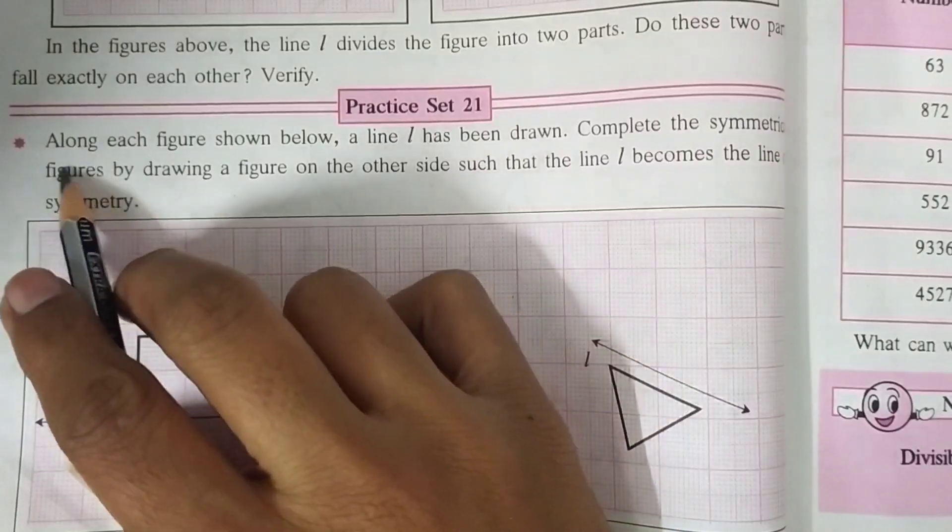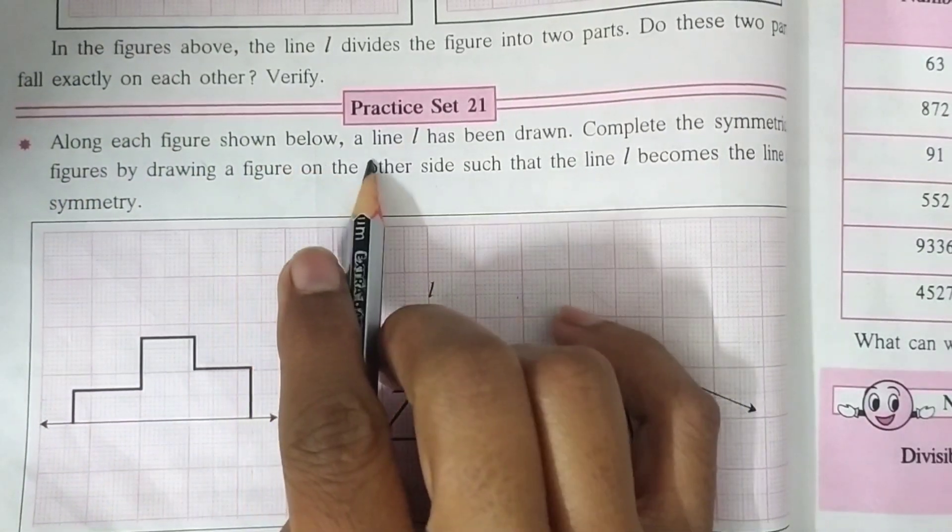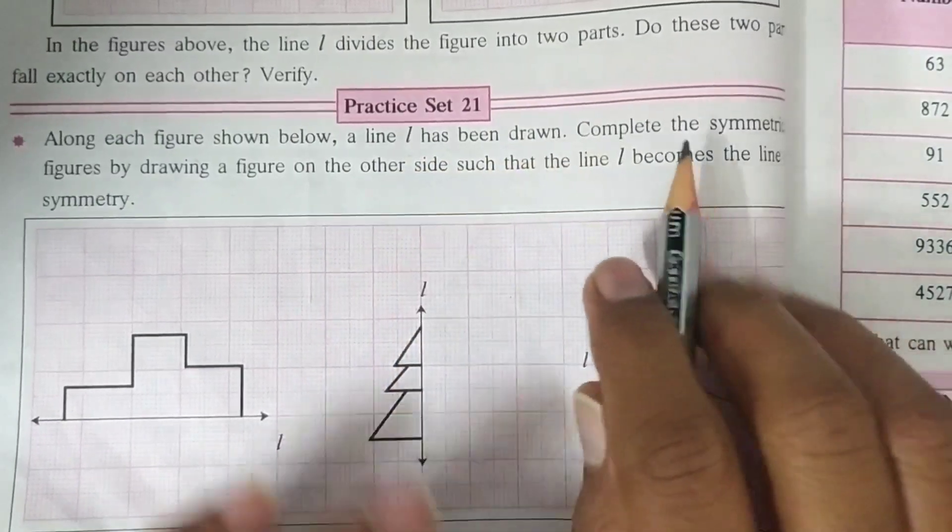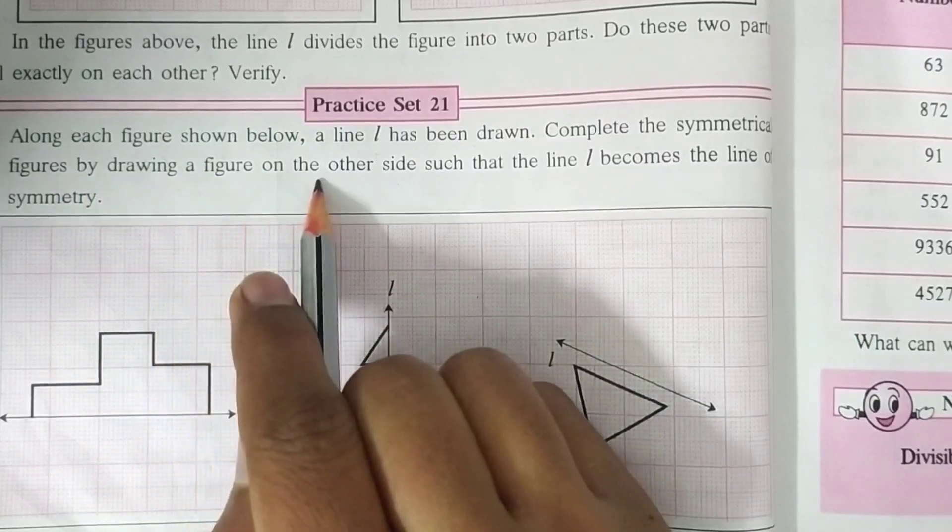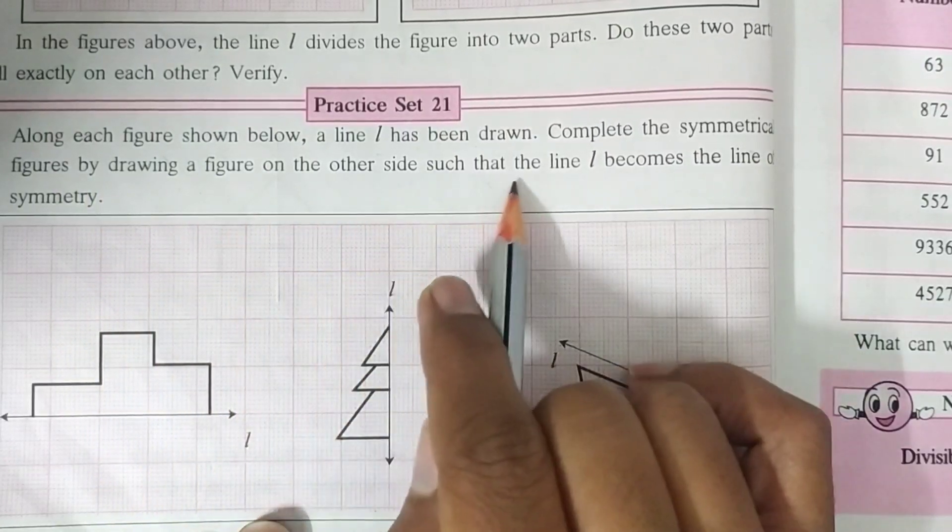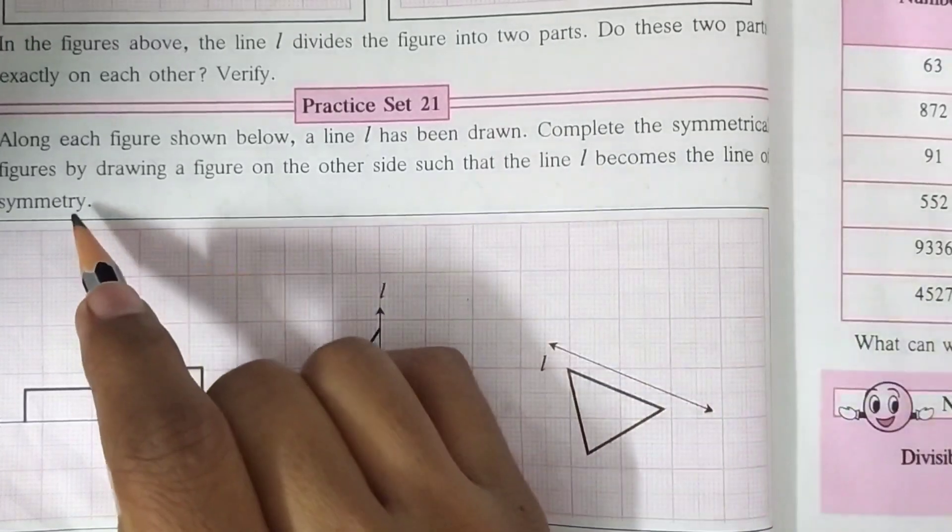So the question is: along each figure shown below, a line L has been drawn. Complete the symmetrical figures by drawing a figure on the other side such that the line L becomes the line of symmetry.